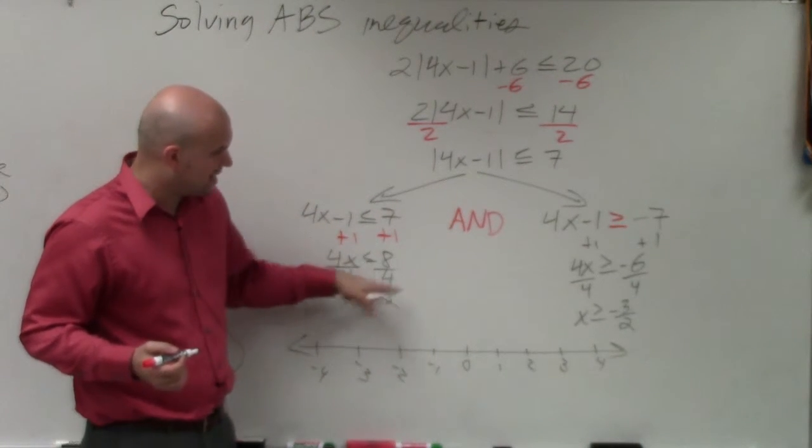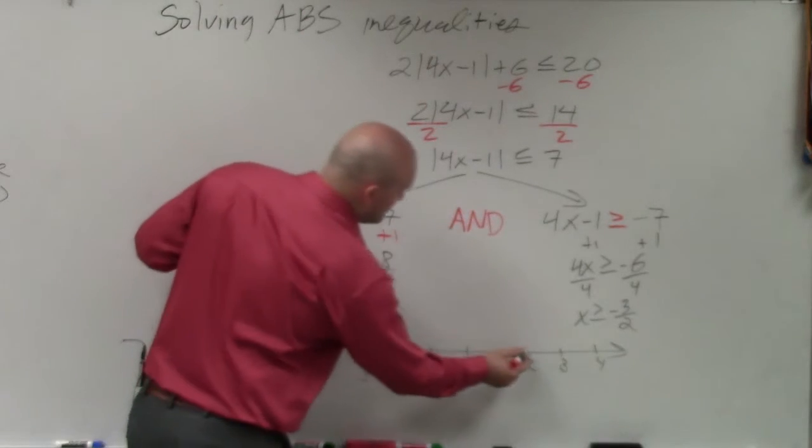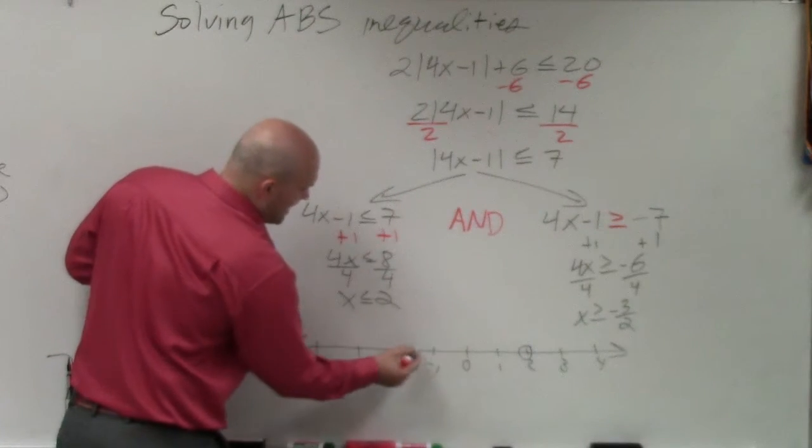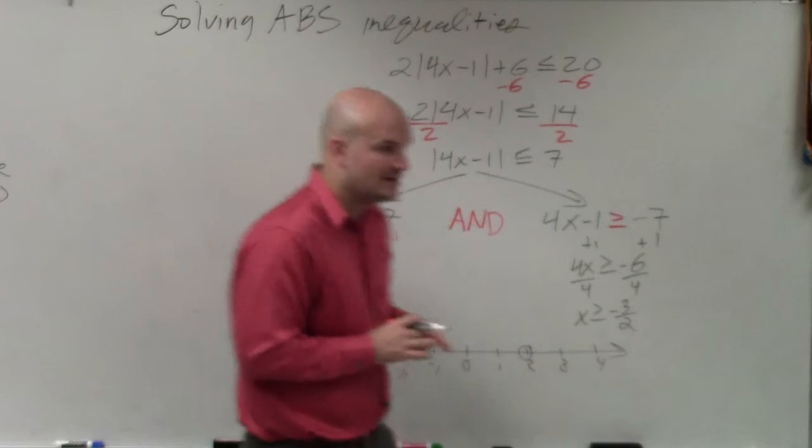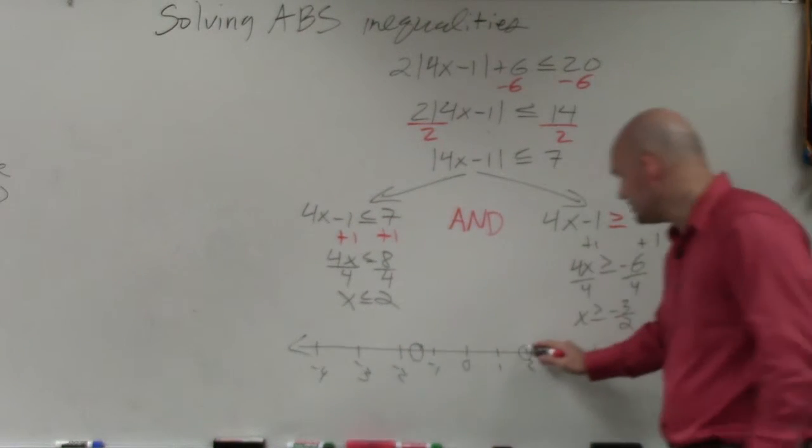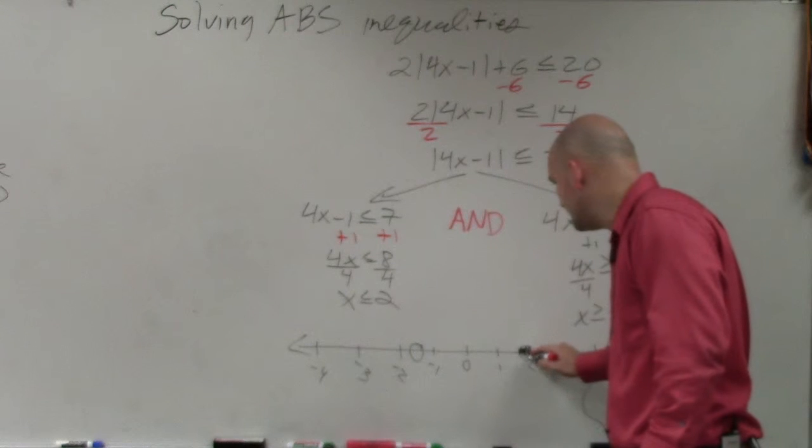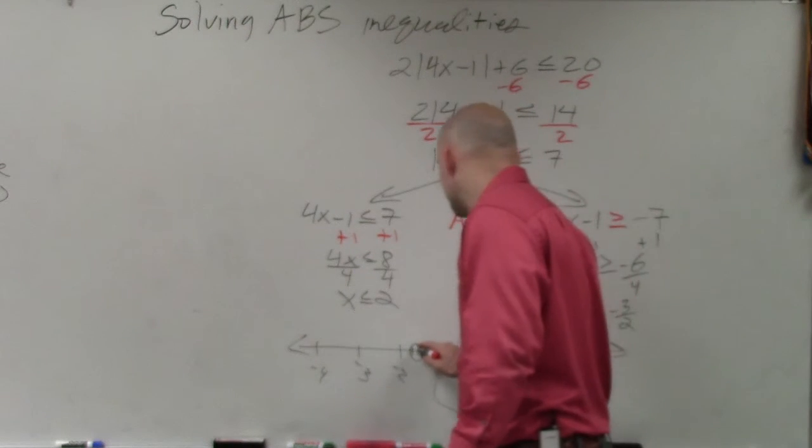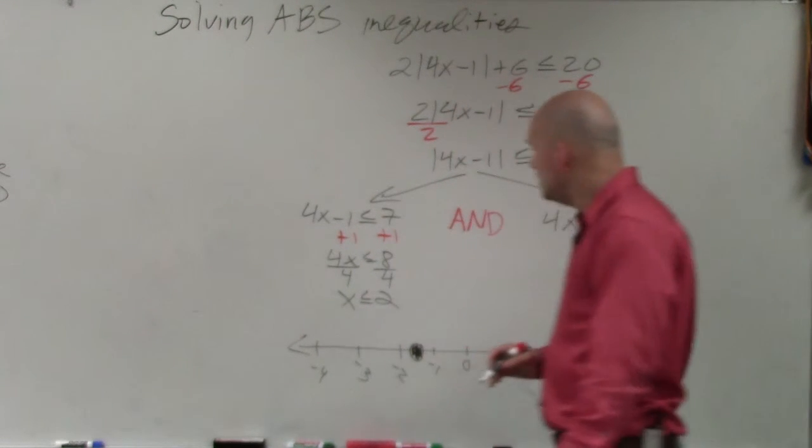OK. So again, we're going to do the same thing. We're going to plot our two solution points. So we'll have 2 and negative 3 halves, which is like in between negative 1 and negative 2. We know that these are greater than or equal to, so they're going to be closed. They're included, or less than or equal to.